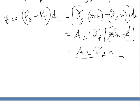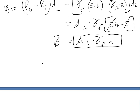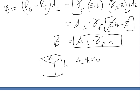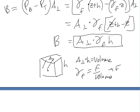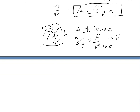So we get B equals A (cross-sectional area) times unit weight times H. A times H equals volume, and unit weight times volume equals force — the weight of the displaced fluid. So that's the proof of it: buoyant force equals the weight of the displaced fluid.